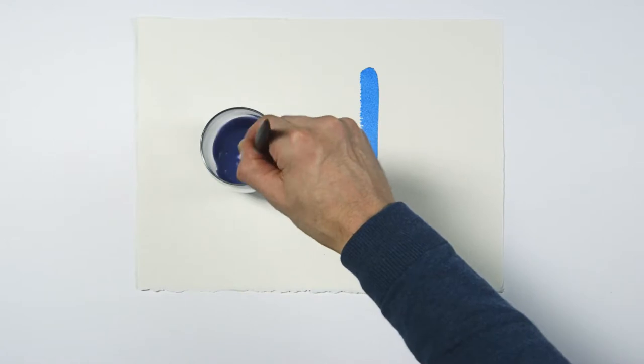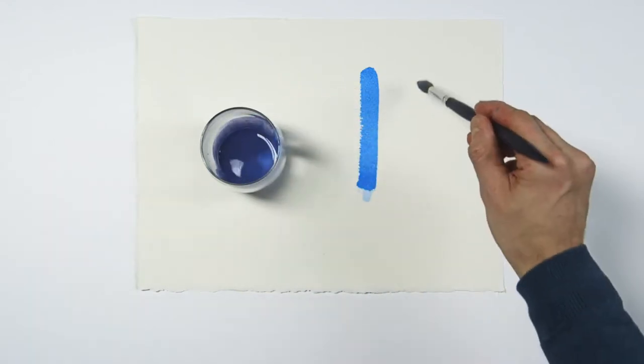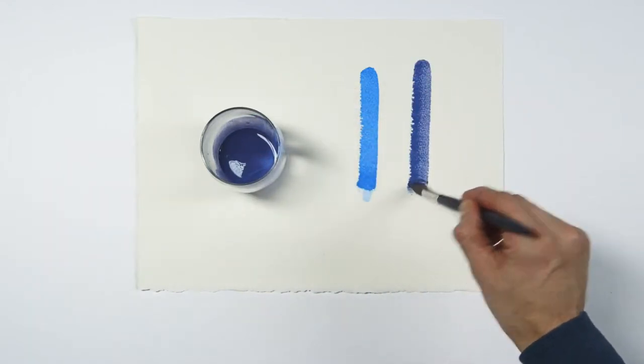Always try to add the color which is stronger in tinting strength to the weaker color. Test to see if more color is needed.